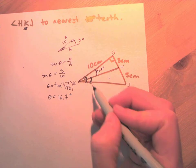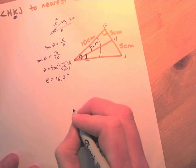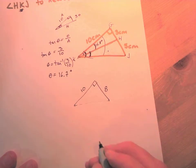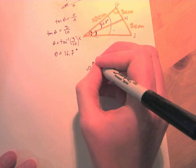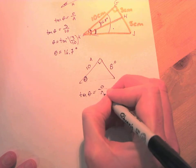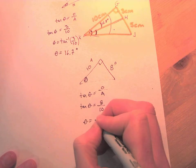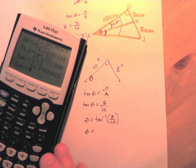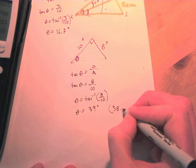Now finding the full angle using the big triangle: O = 3 + 5 = 8, A = 10. Using tangent: tan θ = 8/10, so θ = tan⁻¹(8/10). Typing into the calculator gives approximately 38.66 degrees. That's the full angle from the base to the upper ray KH.